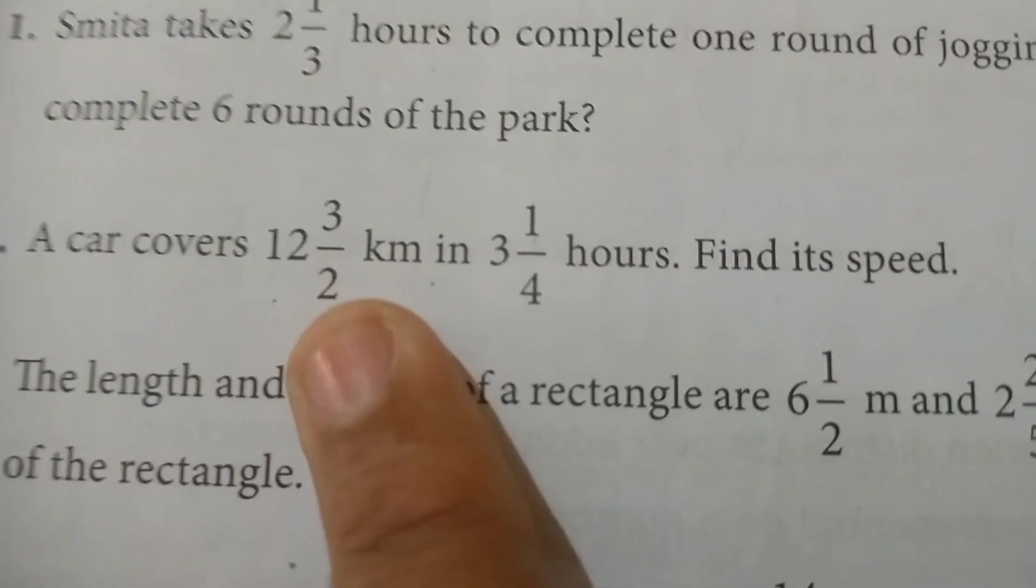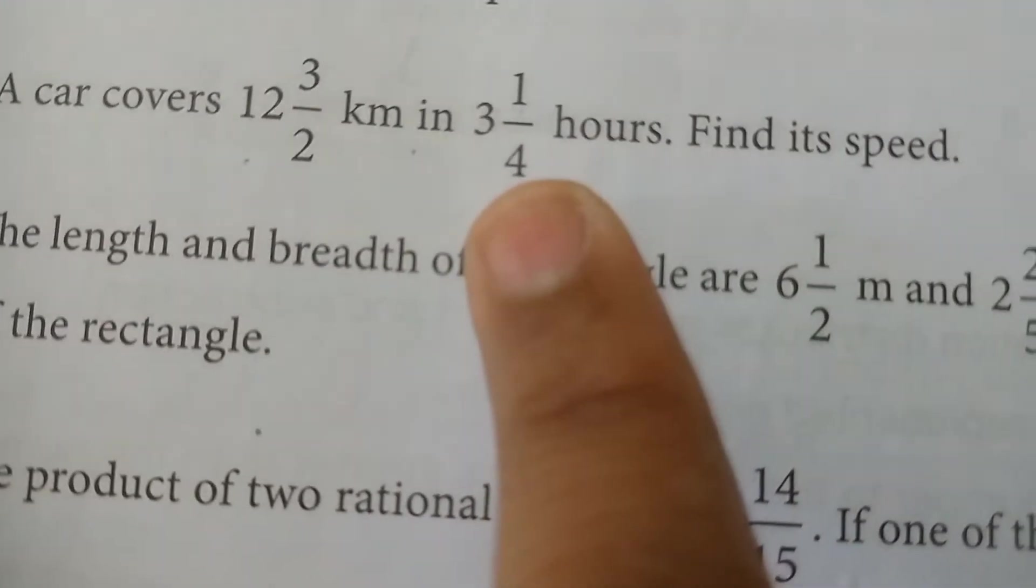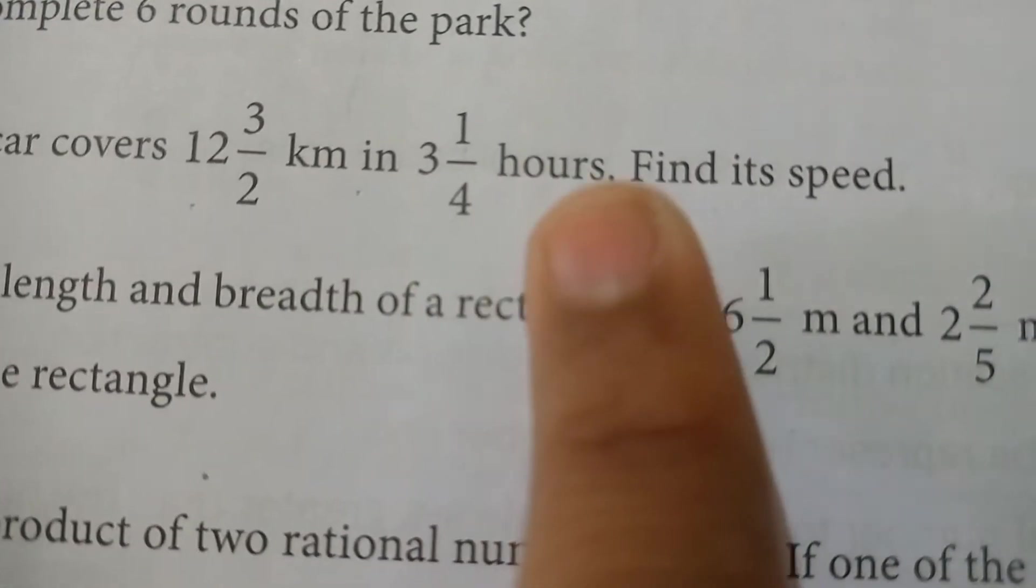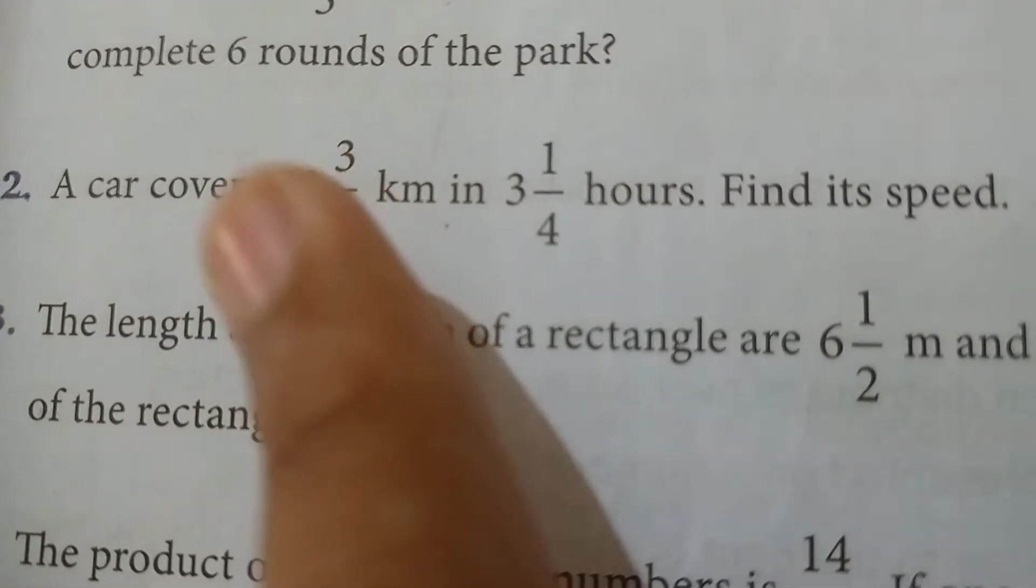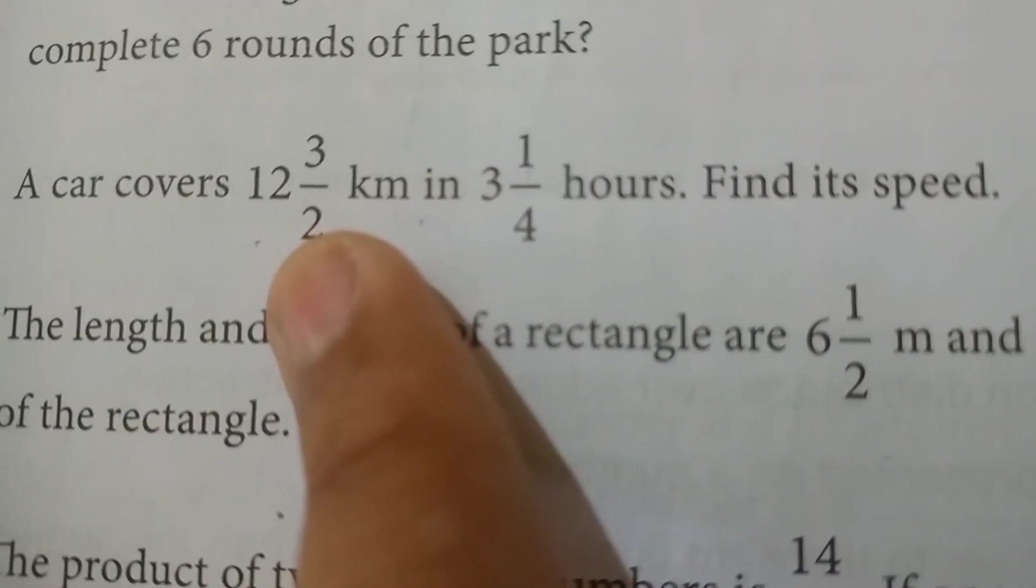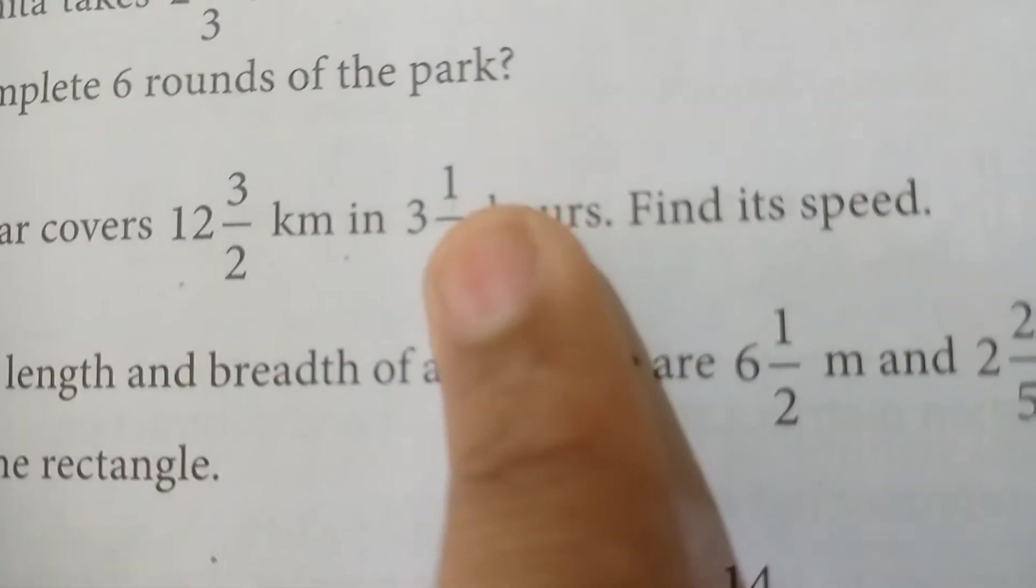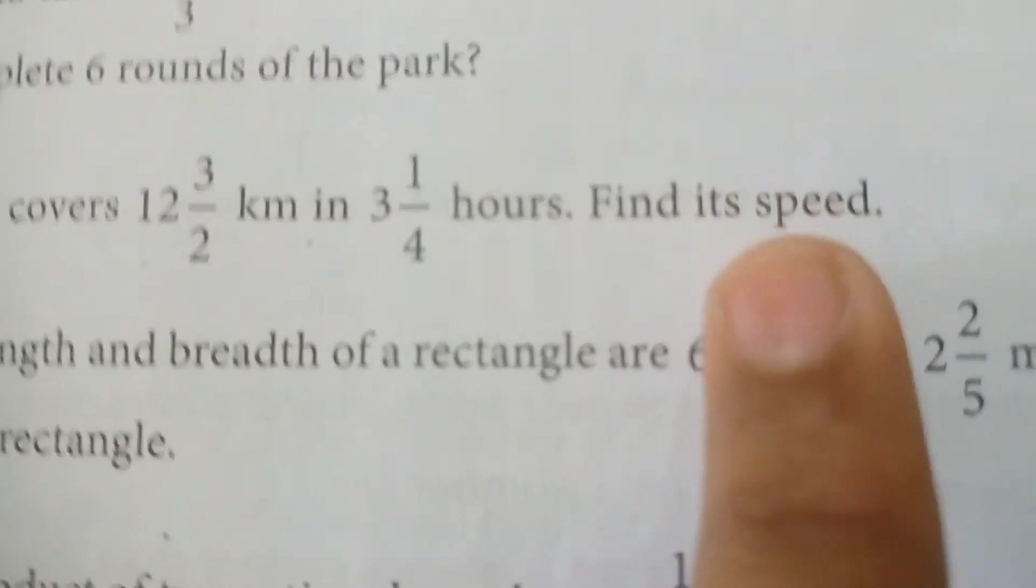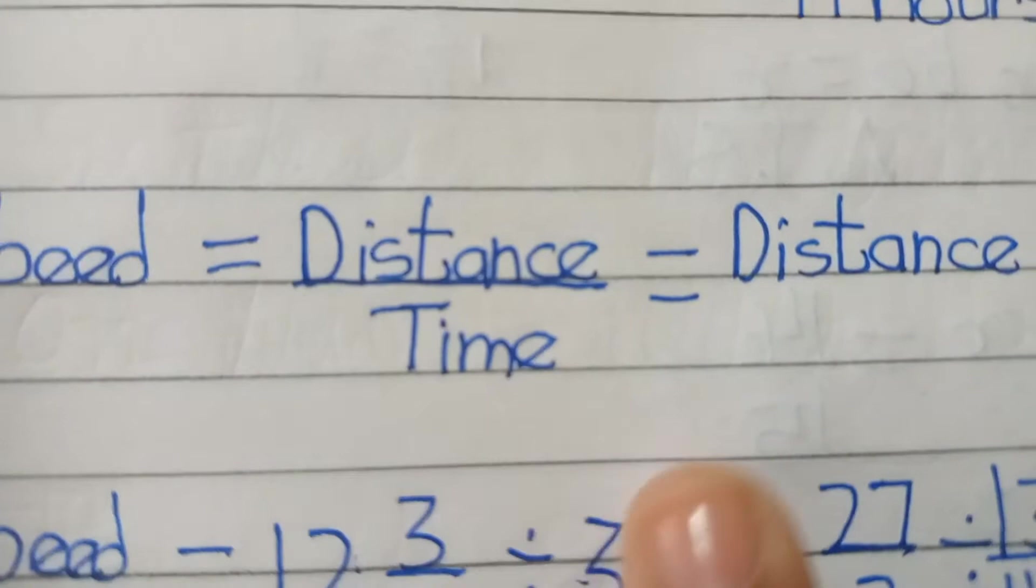Ab hum karte hain second question. A car covers 12 whole 3 over 2 km in 3 whole 1 over 4 hours. So ek car hai jo ki cover karti hai 13 km hi, 13 km ke aaspass kyunki yahan par likha hua hai jaise ki 3 whole 1 over 4 hours. So humein uski speed find karni hai.